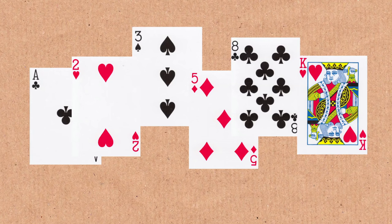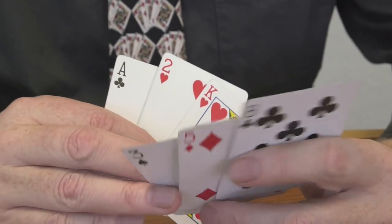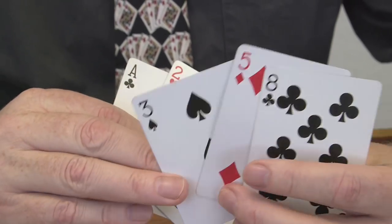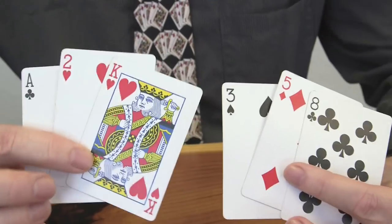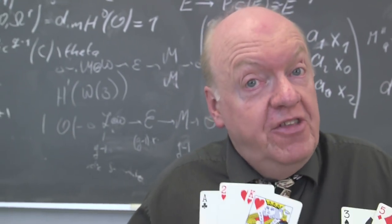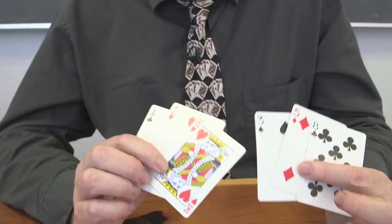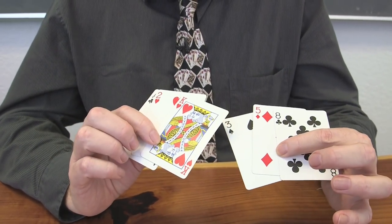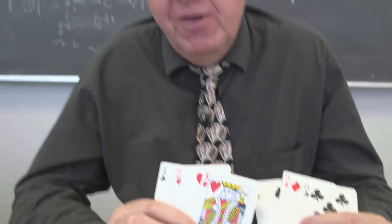If somebody picked the Ace, the 2, and the King, they would add up to 16, but that's also true for somebody who picked the 3, the 5, and the 8. So when you play this with three people picking cards, you run the risk of this happening. It turns out it's the only possible hitch. So you can do this, and if it happens, you have some choices. You have to fish for a little more information.